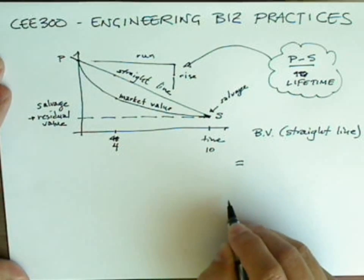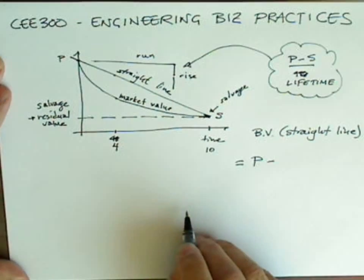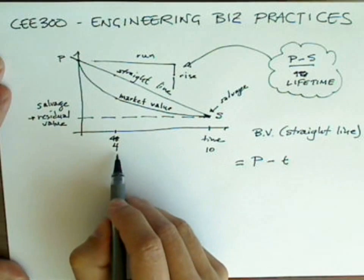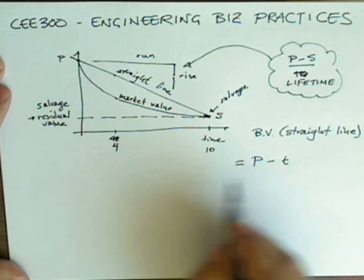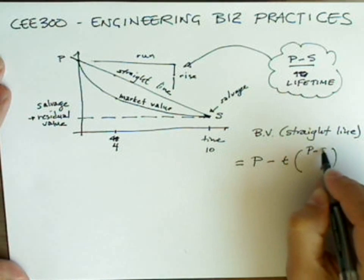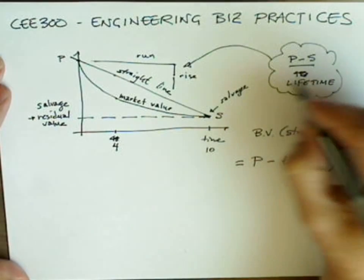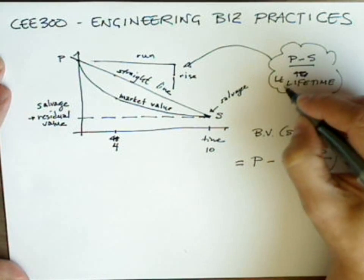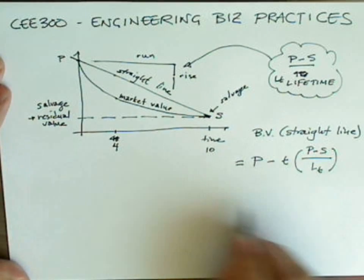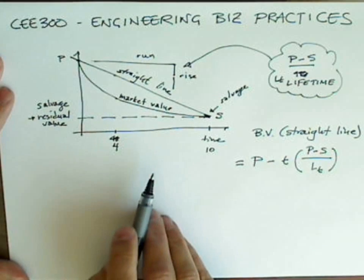Would be equal to P, this is our starting place, minus T, for example, four years, right? So we put four in there. P minus S over, let me just say LT, this is lifetime. So now we can get the book value in any given year, and as we know, the depreciation is constant.